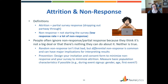Random non-response isn't that bad, but differential non-response — when different types of people are systematically more or less likely to respond — is quite common and can have big implications for interpreting your results. The best approach is prevention: design your invitation and consent form to keep non-response as low as possible, keep your survey short, sweet, and easy to understand to minimize attrition, and measure basic population characteristics during event or mailing list sign-up if possible.